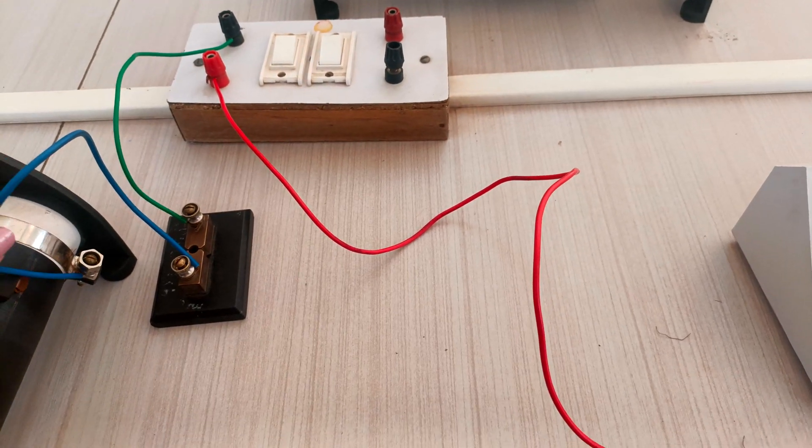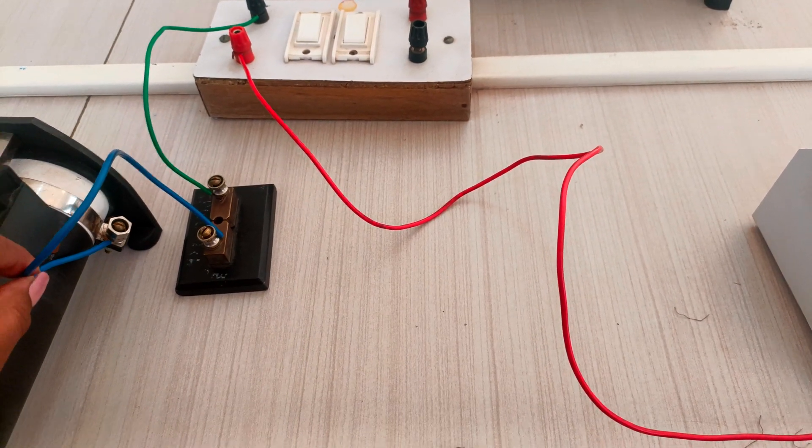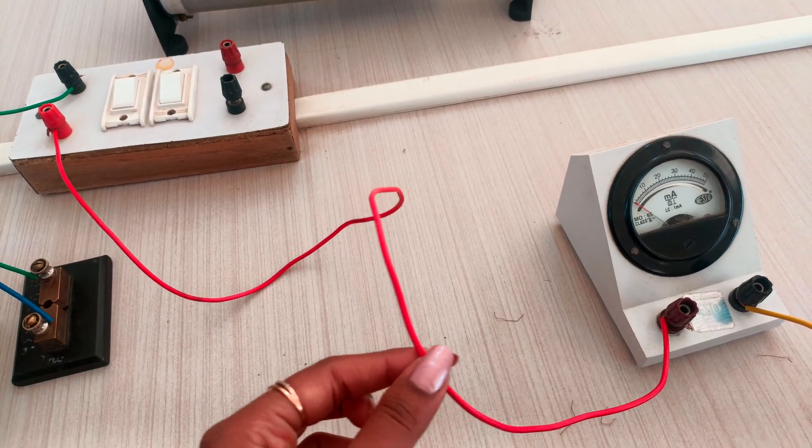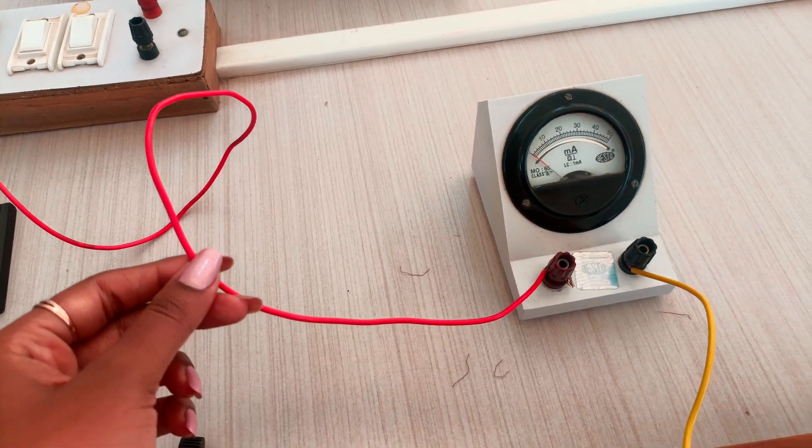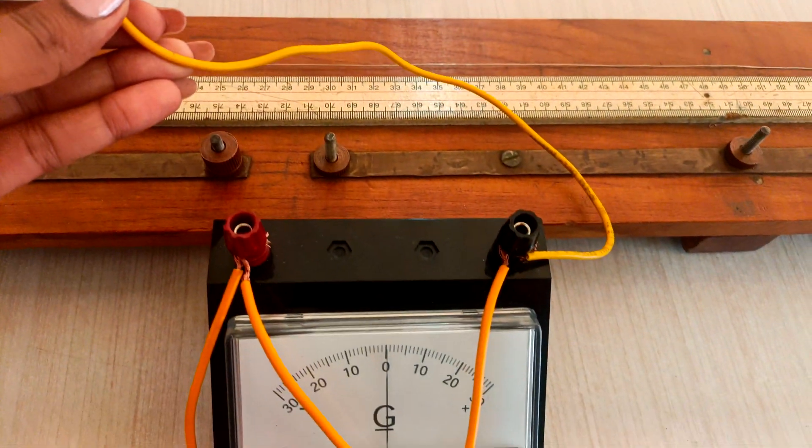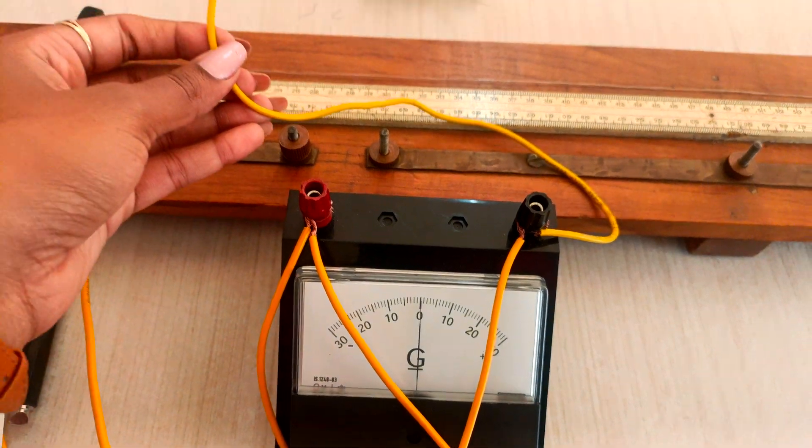One end of the plug key is connected to the lower end of the rheostat. Positive of the battery is connected to the positive of the milliammeter. The other end, that is negative of the ammeter, is connected to the galvanometer.